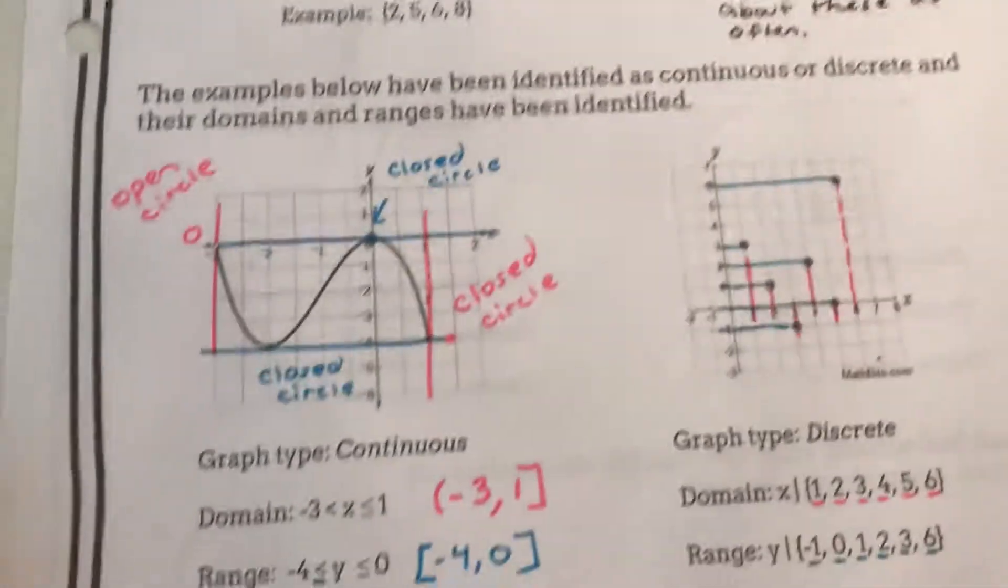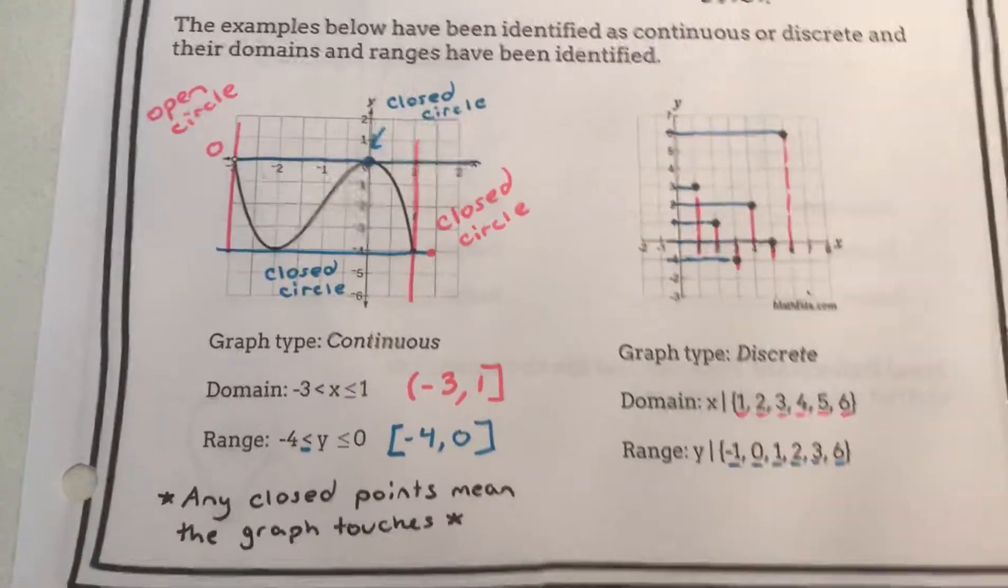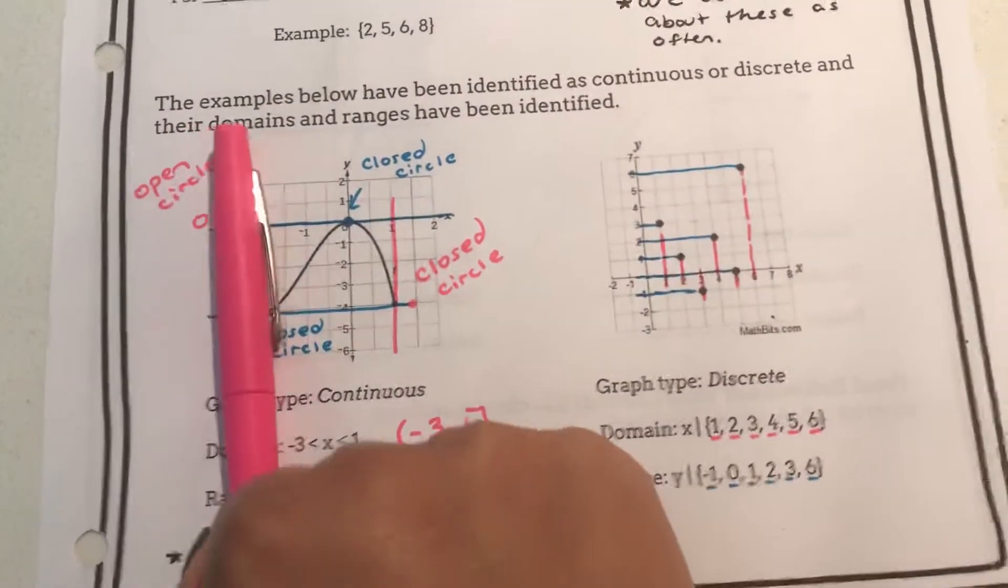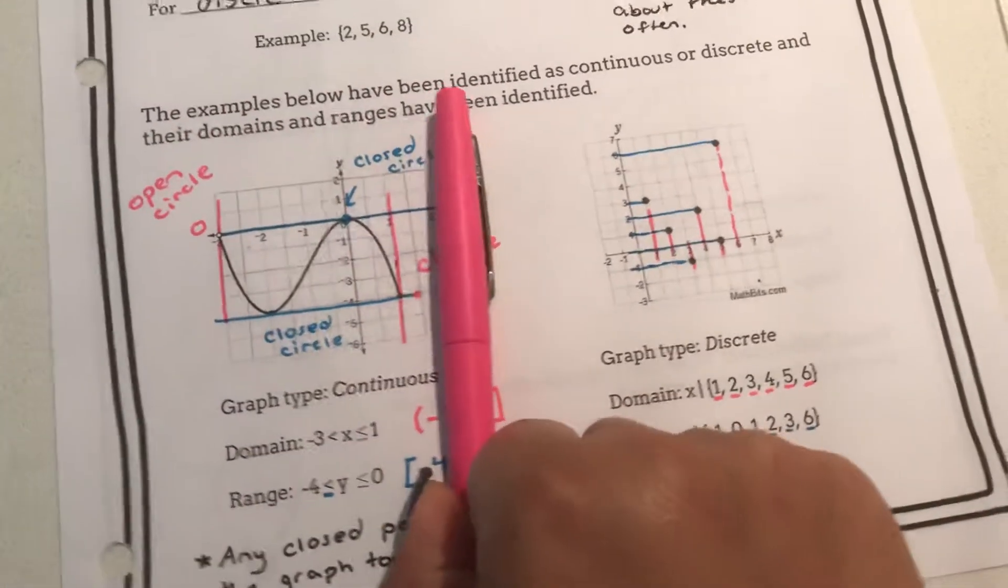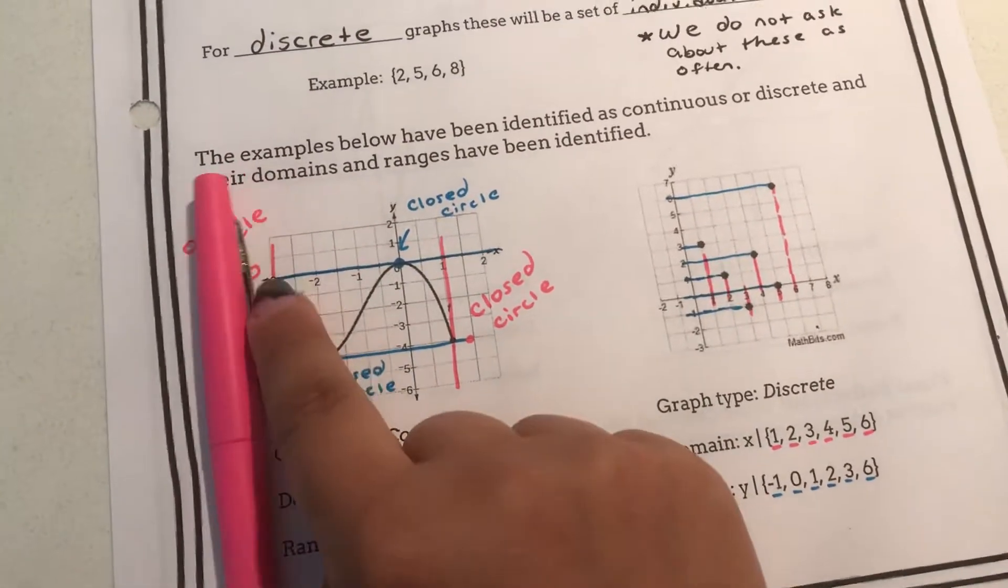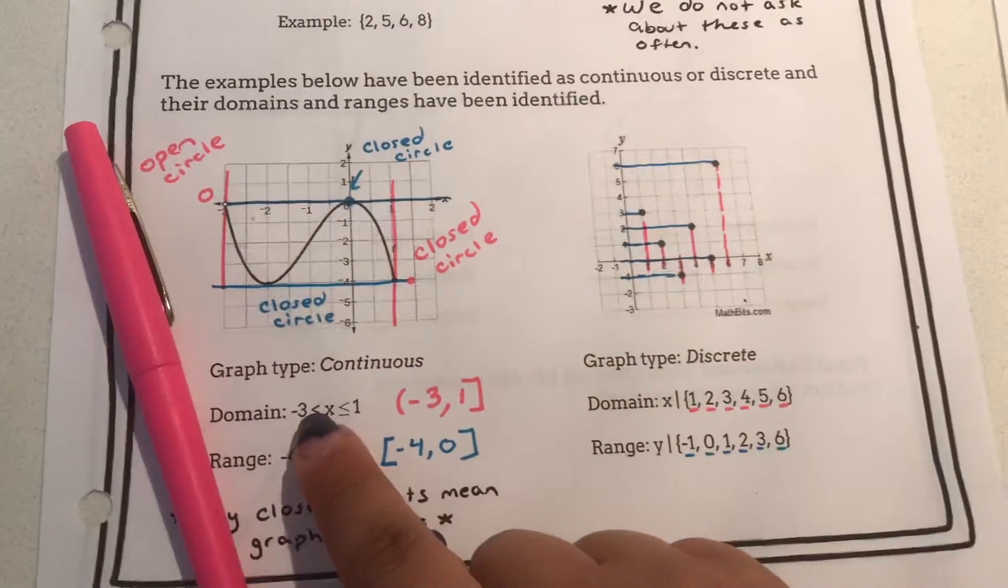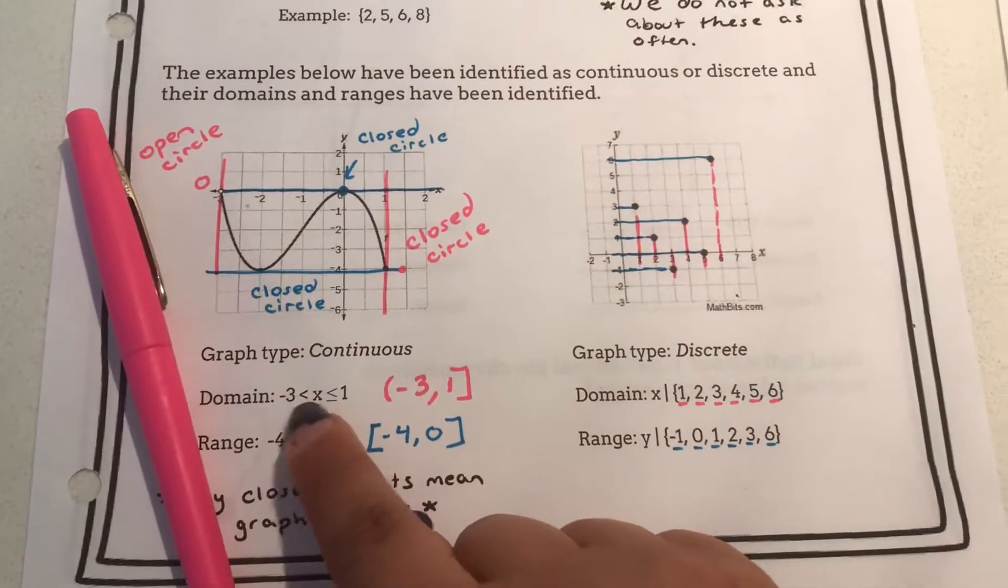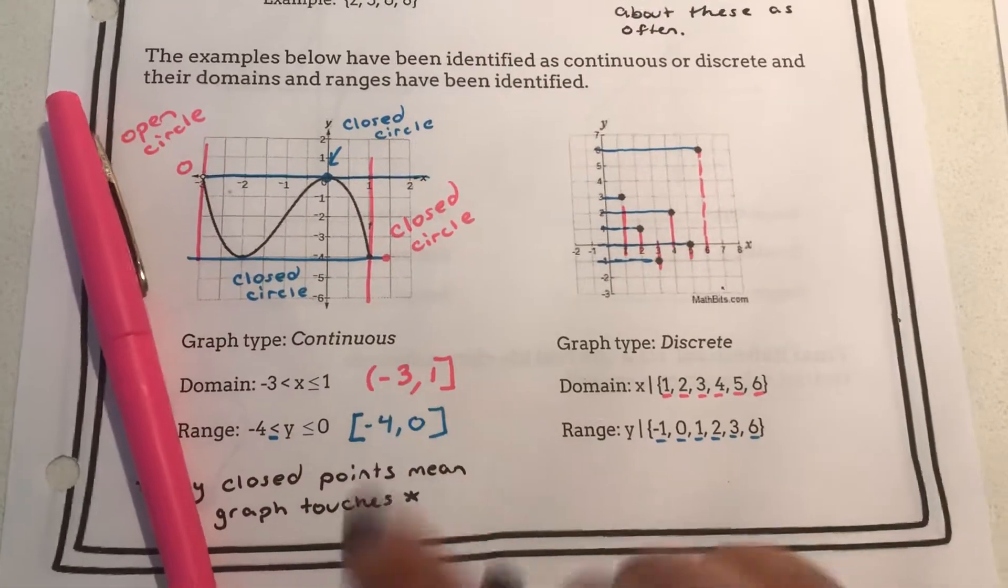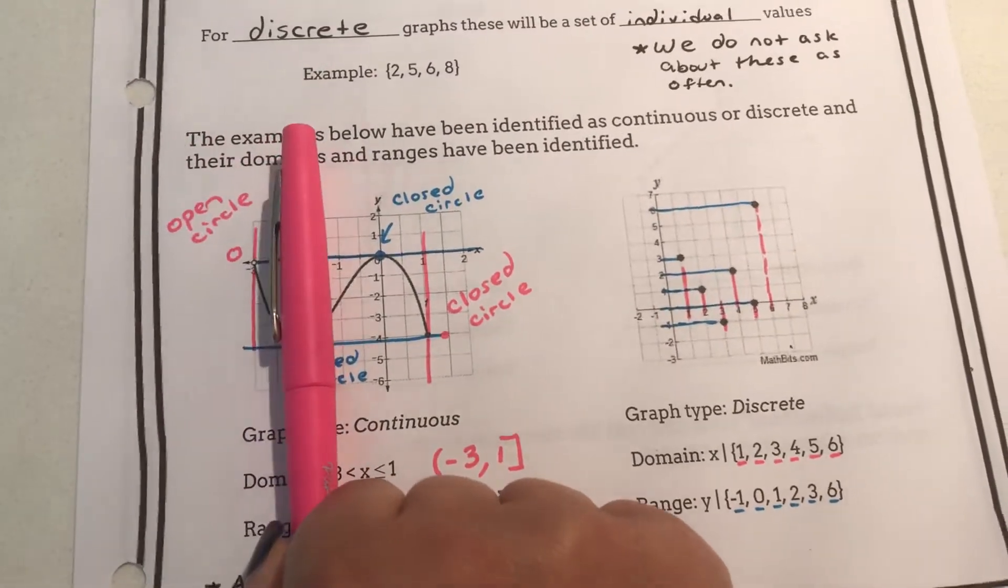So let's look at these examples below. For my domain I took my pink pen and I dragged it across the x-axis and I see that my graph starts at negative three with an open circle. Therefore the graph is not equal to negative three or in set notation will have a parenthesis.